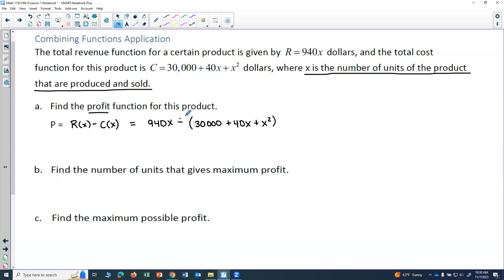And we have to remember to distribute the negative. So that's why I put the cost function in parentheses so that I'll remember to distribute. So I have 940x - 30,000 - 40x - x². So the negative went to all of the terms in the cost. Now I have to combine like terms. I have 940x - 40x.